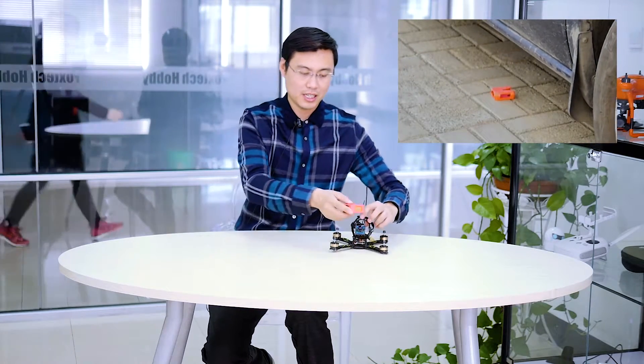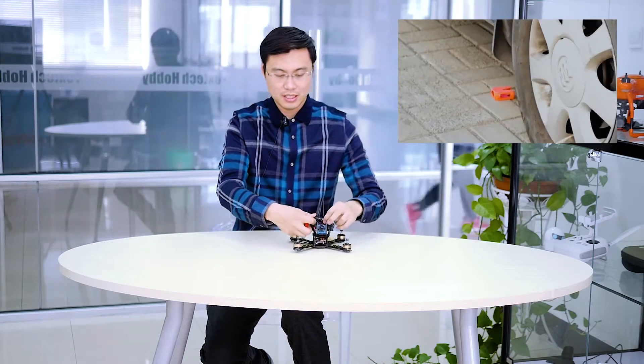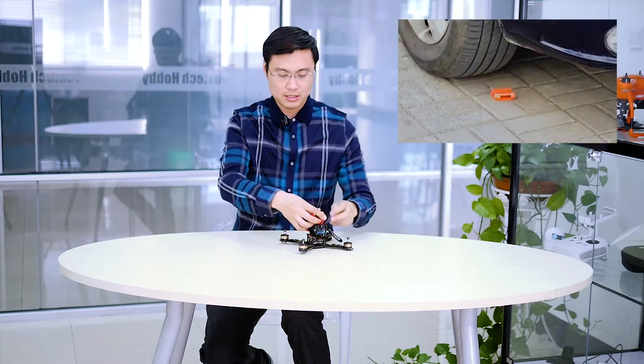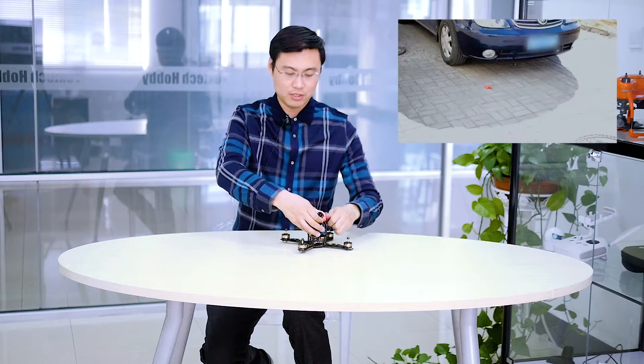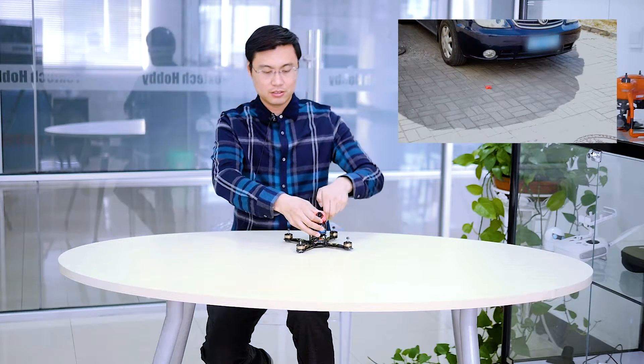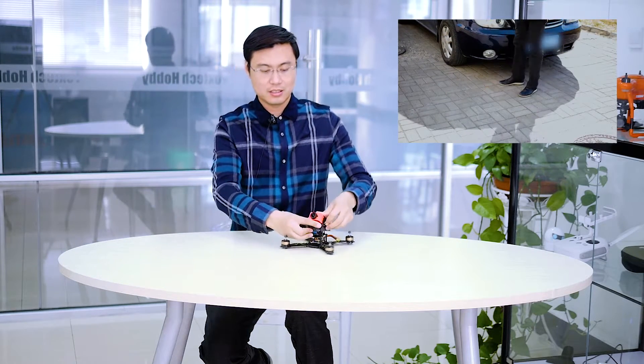Because this material is soft, if you tighten it on the racing quad with your battery strap like this, it just locks itself in place. It never gets out. So it's very tight.